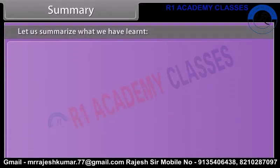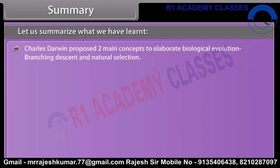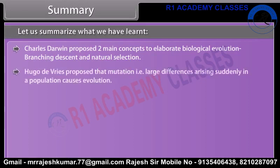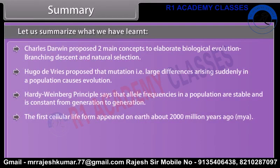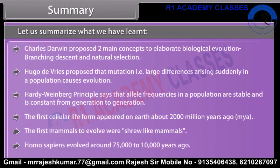Summary: Charles Darwin proposed two main concepts of biological evolution: branching descent and natural selection. Hugo de Vries proposed that mutation, i.e. large differences arising suddenly in a population, causes evolution. The Hardy-Weinberg principle states that allele frequencies in a population are stable and constant from generation to generation. The first cellular life form appeared on earth about 2,000 million years ago. The first mammals to evolve were shrew-like mammals. Homo sapiens evolved around 75,000 to 10,000 years ago.